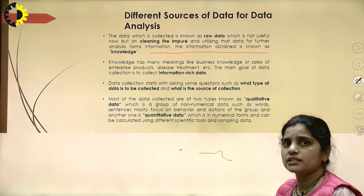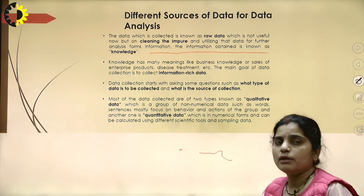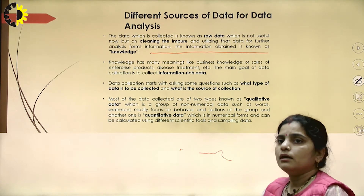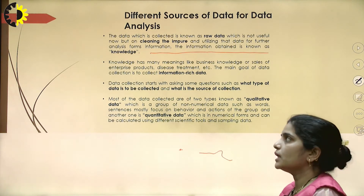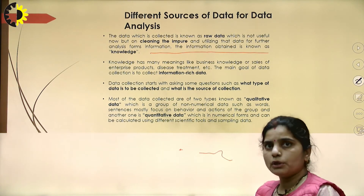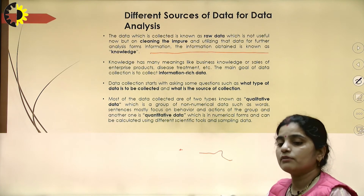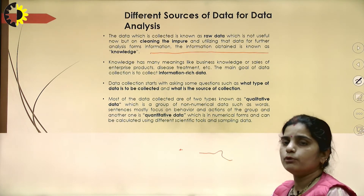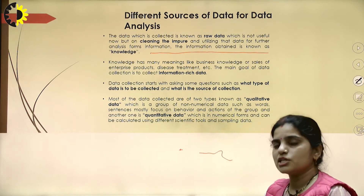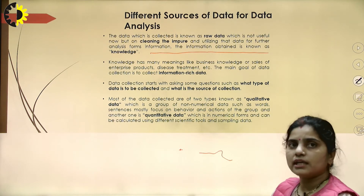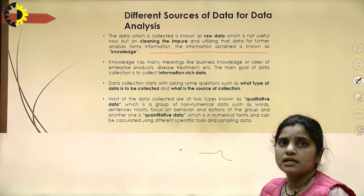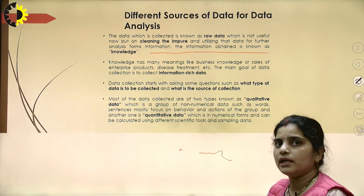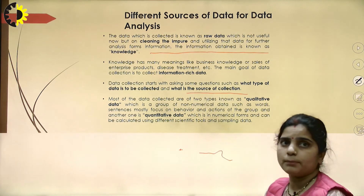The main goal of data collection is to collect information-rich data. Information-rich data means that whatever data we are going to collect must fulfill the objective or primary goal of the target audience — whatever the purpose for which we are going to analyze the data. The data collected must fulfill the requirements of the particular organization or target audience. The data collection process starts with asking some questions: what type of data are we going to collect, and what is the source of collection of that particular data?